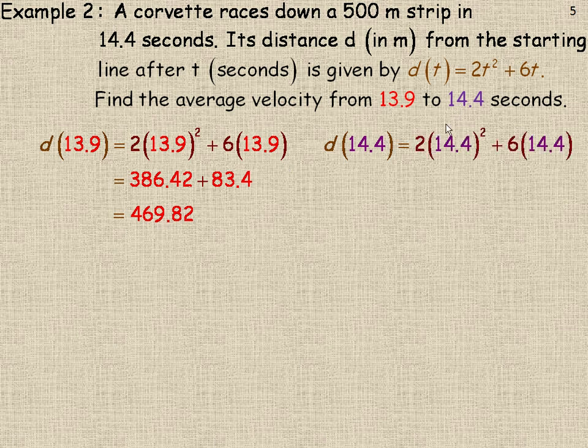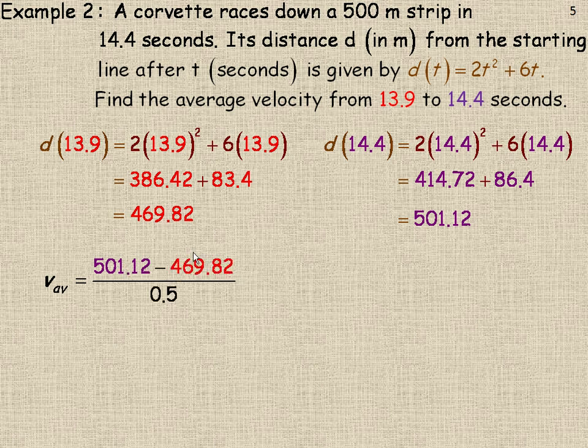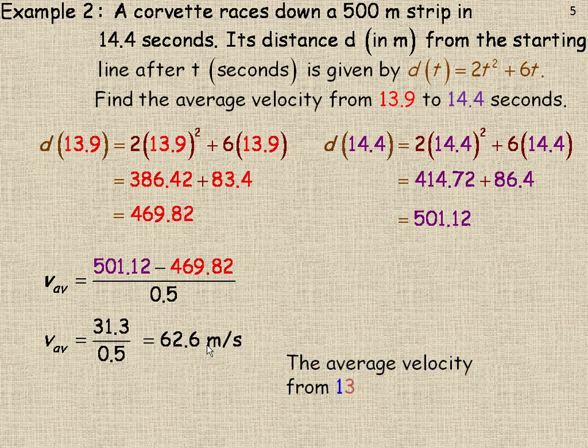Now we'll find the distance after 14.4 seconds in the same fashion. After 14.4 seconds it's gone 501.12 meters. Now to find the average velocity between this time and this time, we would subtract the distances, 501.12 and 469.82, and divide that by the difference in time. From 13.9 to 14.4 seconds, that's half a second. And so we get an average velocity of 62.6 meters per second. So the average velocity from 13.9 to 14.4 seconds is 62.6 meters per second.